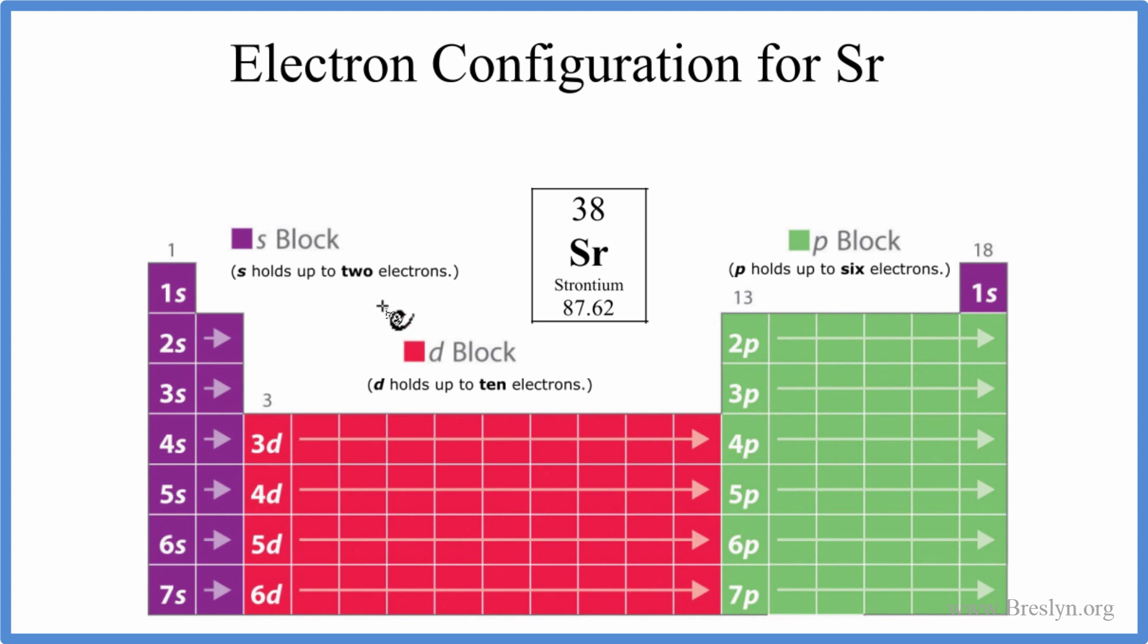So to write the electron configuration, we'll use this periodic table here, broken up into these orbital blocks. You can also use this chart here. There's a link in the description of this video if you want to do that. I think this is a much better way to do it, though. So we have strontium, Sr, and we have 38 electrons.